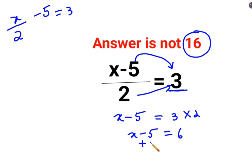Adding both sides by 5, you will get the final answer of x as 11.